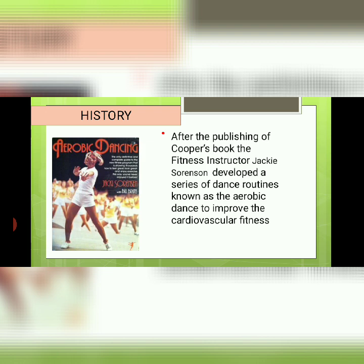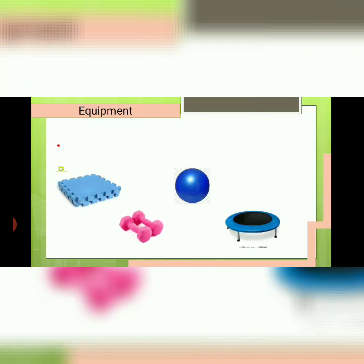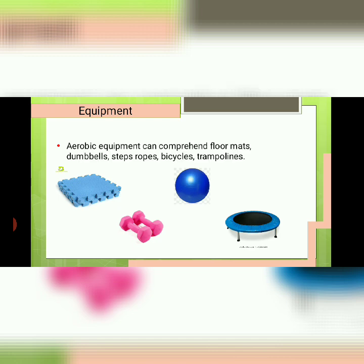After the publishing of Cooper's book, fitness instructor Jackie Sorenson developed a series of dance routines known as aerobic dance to improve cardiovascular fitness. Aerobic equipment can include floor mats, dumbbells, steps, ropes, bicycles, and trampolines. This equipment simulates the movements of aerobic exercises such as walking, jogging, hiking, biking, and climbing — activities that rhythmically and continuously move your large muscles, keeping your heart beating fast enough for aerobic conditioning.